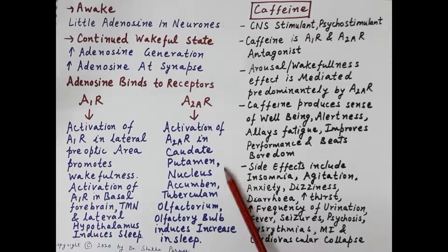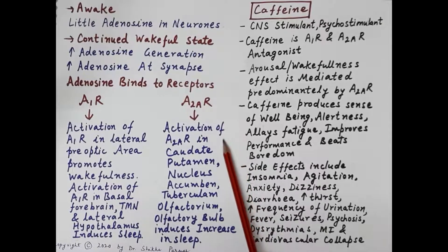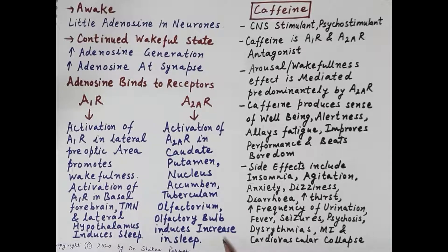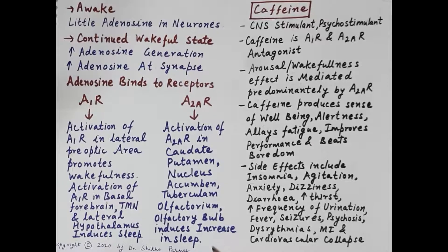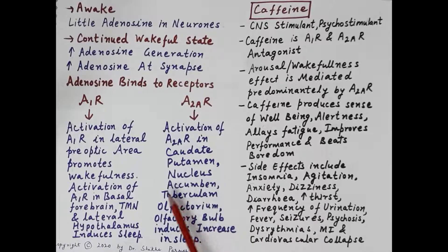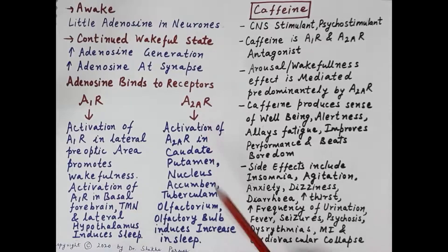Adenosine also binds to its A2A receptor. Activation of the A2A receptor in the caudate putamen, nucleus accumbens, tuberculum olfactorium, and olfactory bulb induces an increase in sleep. The major role in the induction of sleep is the binding of adenosine with the A2A receptor.